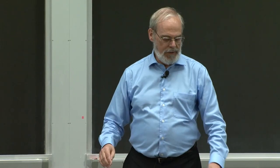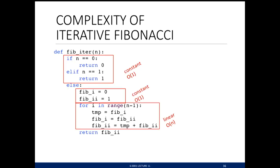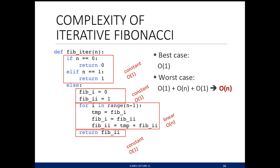Fibonacci iteratively: if n=0 return 0; if n=1 return 1. Otherwise, maintain the two previous Fibonacci values, loop through, updating them: keep a temp, shift the previous values, add them together. The loop runs n times; work inside is constant. The overall algorithm is O(n) — linear. The constant setup operations are all O(1). The bottom line: the worst case is just O(n).